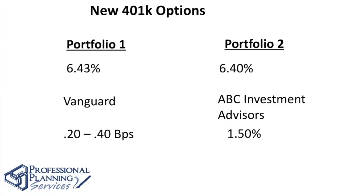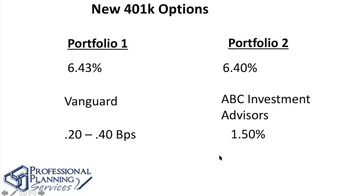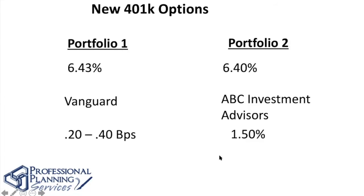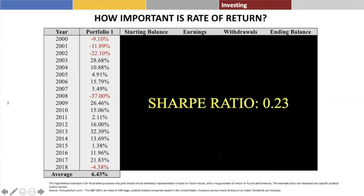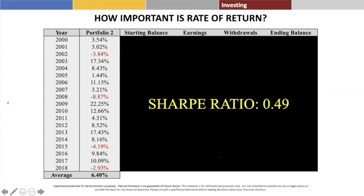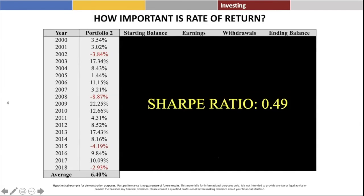Let's see how these portfolios would have fared if we put some numerical values behind them. Portfolio One, over a 19-year period, had some negative years and some positive years. You total all those years up, divide by 19, and get the average of 6.43%. For Portfolio Two, over that same time frame, you add those totals up — that's where the 6.4% comes from.